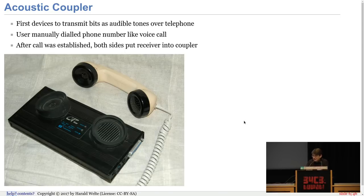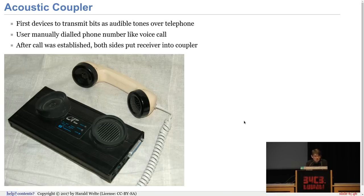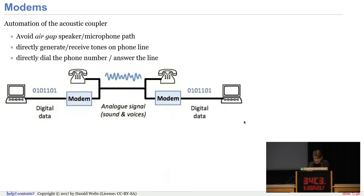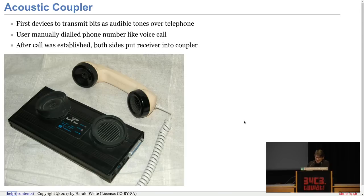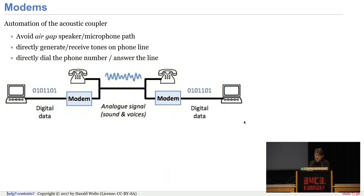With the acoustic coupler, you dial using your normal phone, dial the digits of the phone number, and once the other side picks up the phone, you put your receiver onto the acoustic coupler and data can be transmitted over the telephone line — with manual dial, manual pickup, and rather extremely low speed. You literally have a couple of centimeters of air between the speaker and the microphone in the receiver of your phone versus the acoustic coupler.